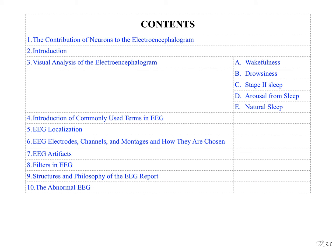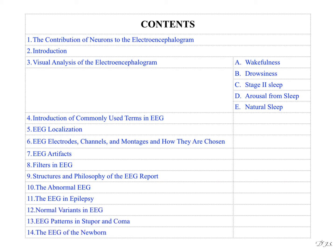the abnormal EEG, normal variants in EEG, EEG patterns in stupor and coma, the EEG of the newborn. Today I will cover up to 3 and in upcoming video I will be explaining the rest of the contents.